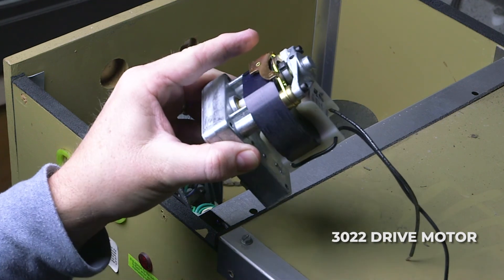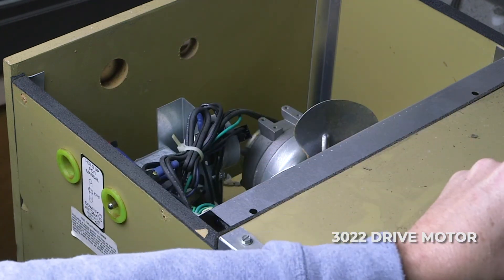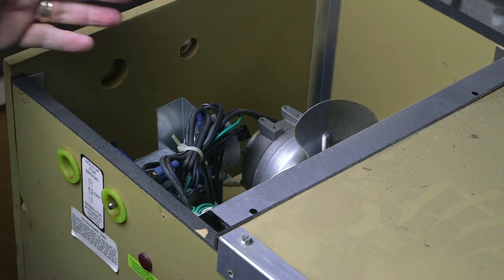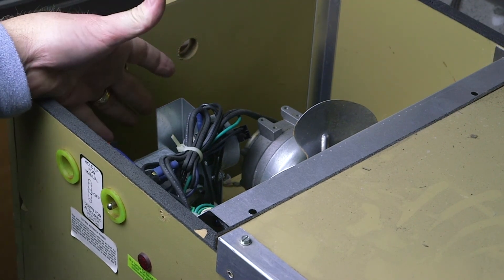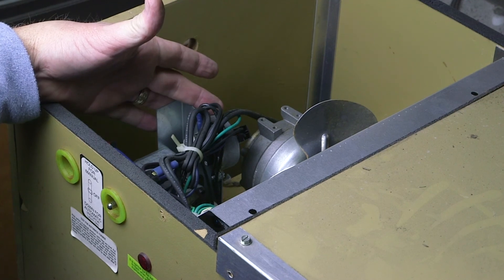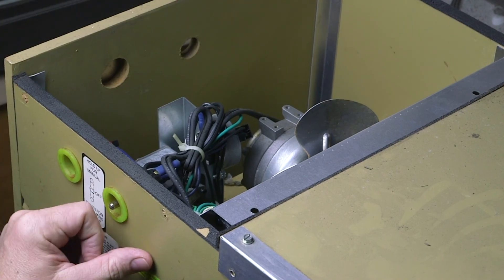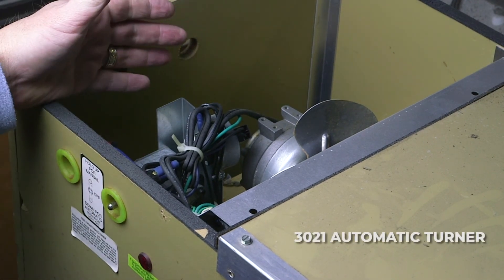It's online or you can give us a call to order that. You can also order this turner complete with the drive motor, timer already installed, new toggle switch, pilot light. All of that is part number 3021 and all of that is available.